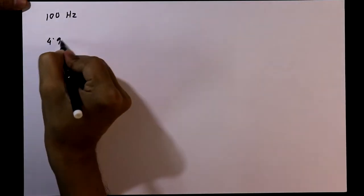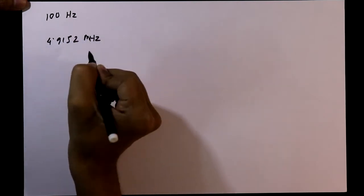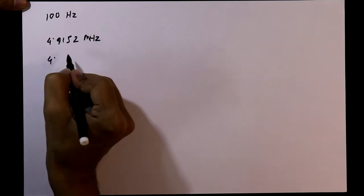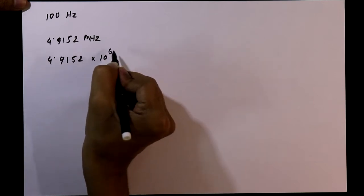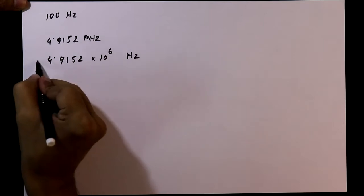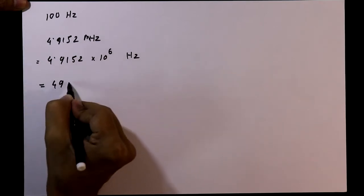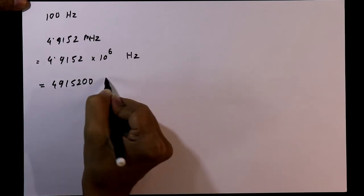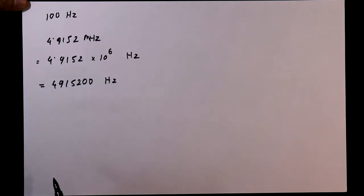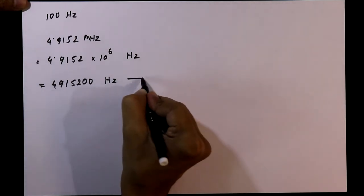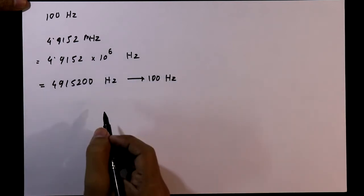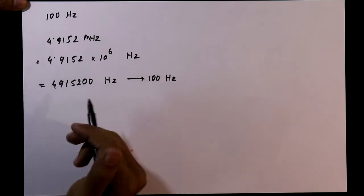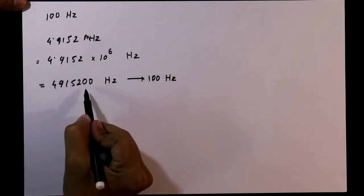To generate 100 hertz frequency we'll use a 4.9152 megahertz crystal oscillator. We can write this as 4.9152 multiplied by 10 to the power 6 hertz, or 4,915,200 hertz. Our aim is to generate 100 hertz, so we need a divider circuit that will divide this number to get 100.